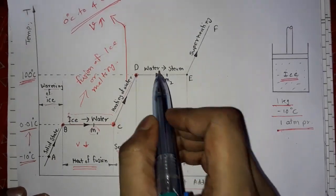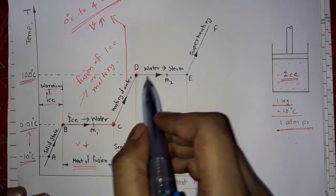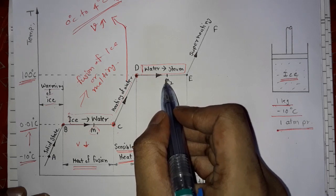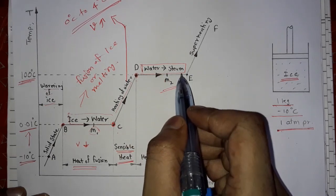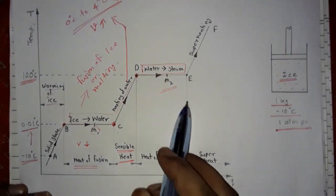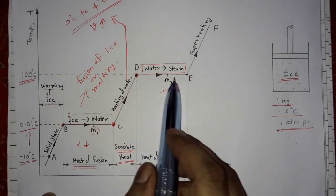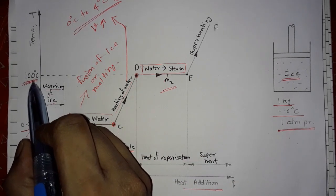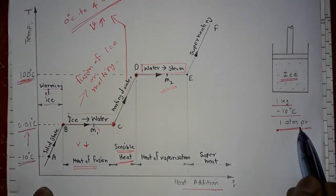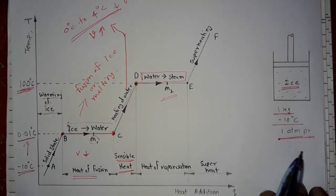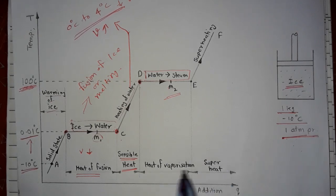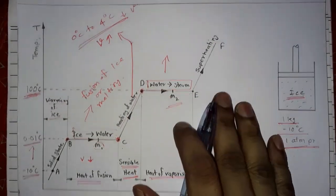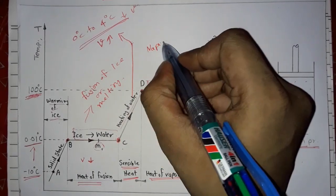At point D, water starts to convert into vapor. During this D to E process there is a mixture of water and steam — a two-phase mixture. Any addition of heat during this process causes no change in temperature; temperature remains constant at 100 degree Celsius and pressure also remains constant at 1 atmospheric pressure. Heat addition during this process is called heat of vaporization, and this phase transformation is called vaporization.